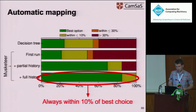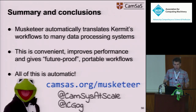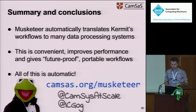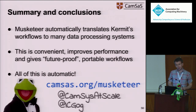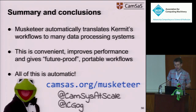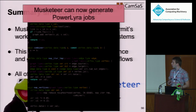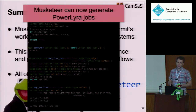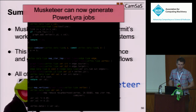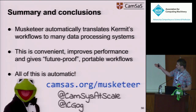To sum up, Musketeer automatically translates workflows and maps them to many data processing systems — it's easy to use and makes workflows portable and faster. With Musketeer, Kermit no longer has to be a hermit working long hours, because he can automatically generate his jobs. One more thing: Musketeer can now generate PowerLyra jobs. Check the website for more details and we'll soon do an open source release.